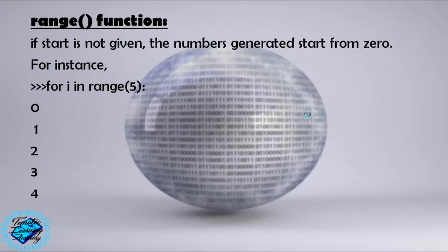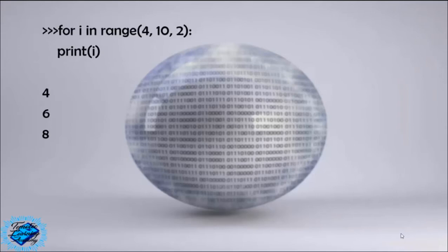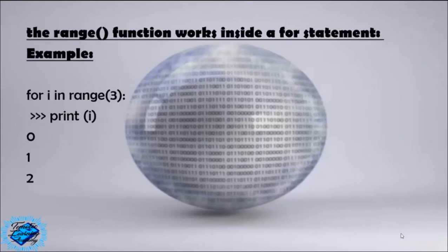For instance, range(5) will generate the list 0, 1, 2, 3, 4. For i in range(3, 10): print(i) will generate 3, 4, 5, 6, 7, 8, 9. range(4, 9, 2) will generate 4, 6, 8. The range function works inside a for statement. Example: for i in range(3): print(i) gives 0, 1, 2.